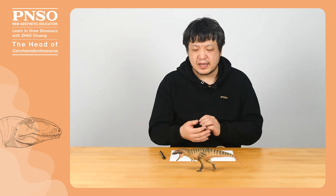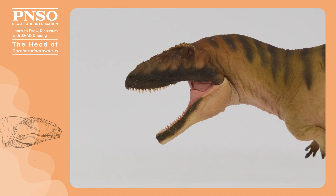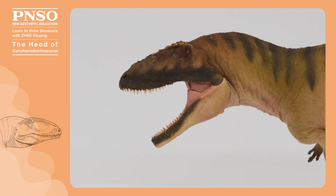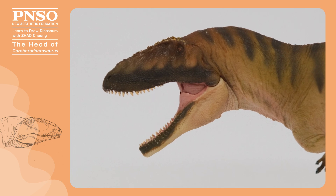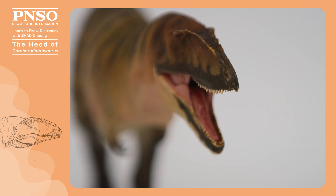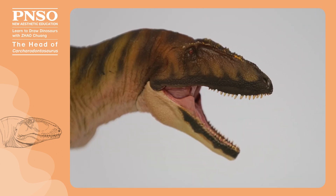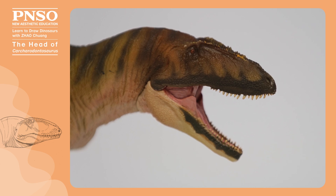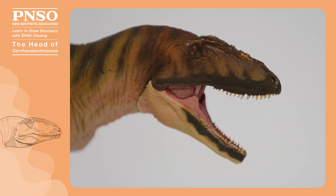Hello, everyone. I'm Zhao Chuang. We are going to draw the head of Carcharodontosaurus today. Carcharodontosaurus is a genus of carnivorous dinosaur with a large head. It had a long head, and another feature was that the front of its mouth was sharp. Its head was generally an arc with its eyes at the top — the arc tilted downward from the back of its eyes. We need to grasp this shape when drawing.